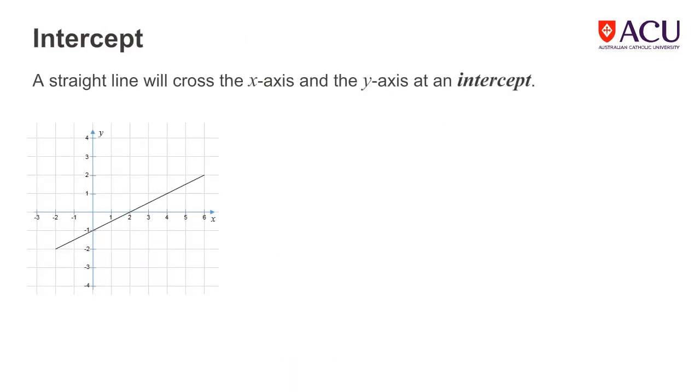The intercept is the point at which the line or curve crosses an axis. The x-intercept is where it cuts the x-axis and where the y-value is 0. The y-intercept is where it cuts the y-axis and where the x-value is 0.